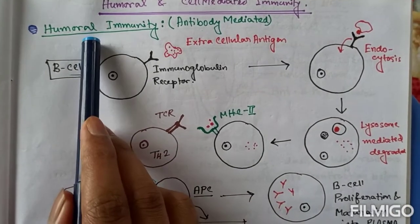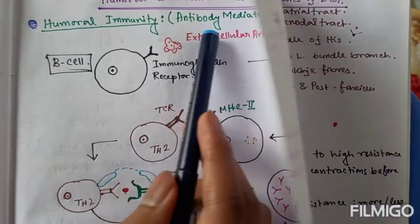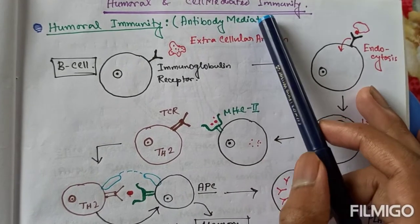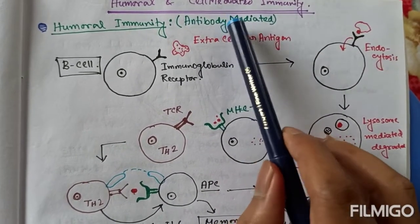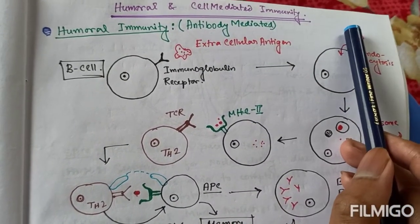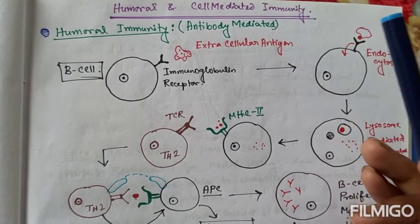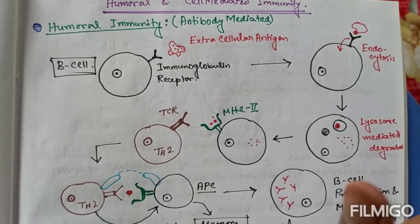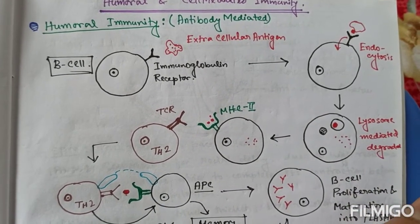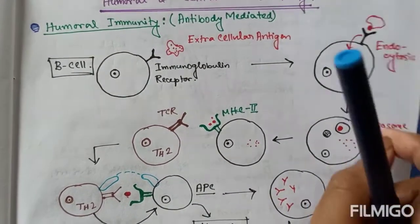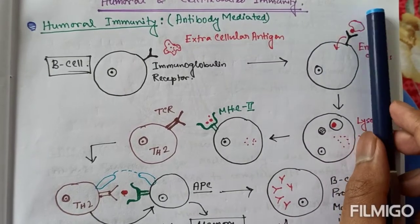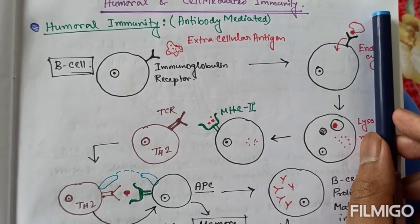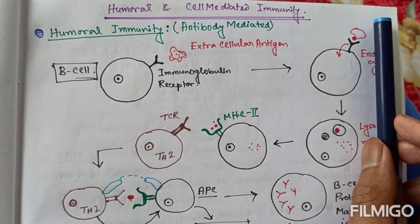First the Humoral Immunity which is also called as Antibody Mediated Immunity. Because Antibody is present in the Serum or Plasma which is also called as Humor. Hence the name Humoral Immunity. And this type of immunity is specifically mediated by Immunoglobulins released from Plasma cells which is the converted form of B-lymphocyte.